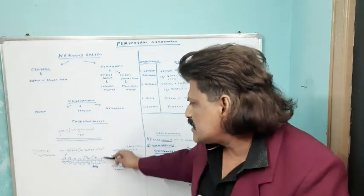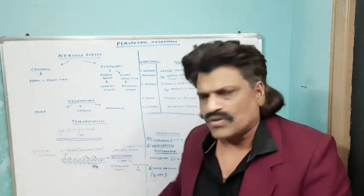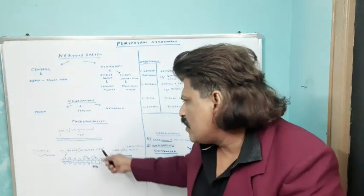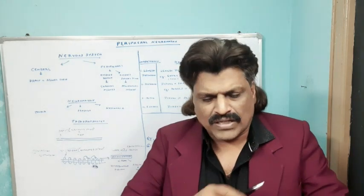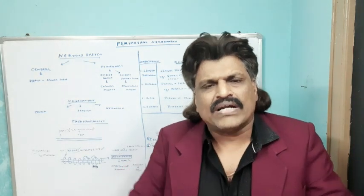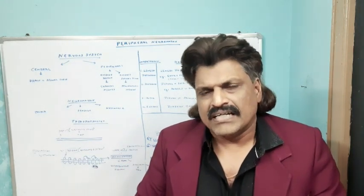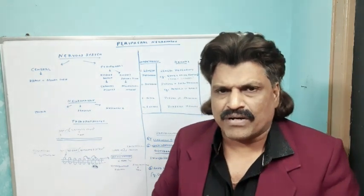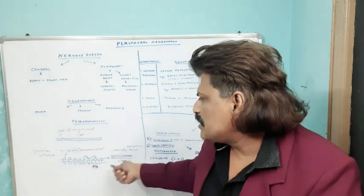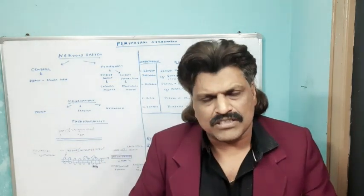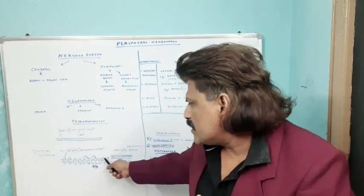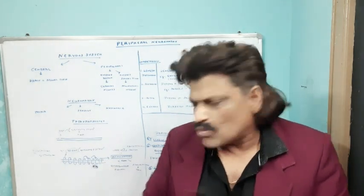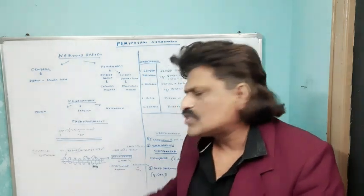The second component is the covering of the axon, what we call the myelin sheath. The myelin sheath of the central nervous system is formed by oligodendroglia, and the myelin sheath of the peripheral nervous system is formed by Schwann cells. In between the myelin sheath, we have gaps what we call nodes of Ranvier.